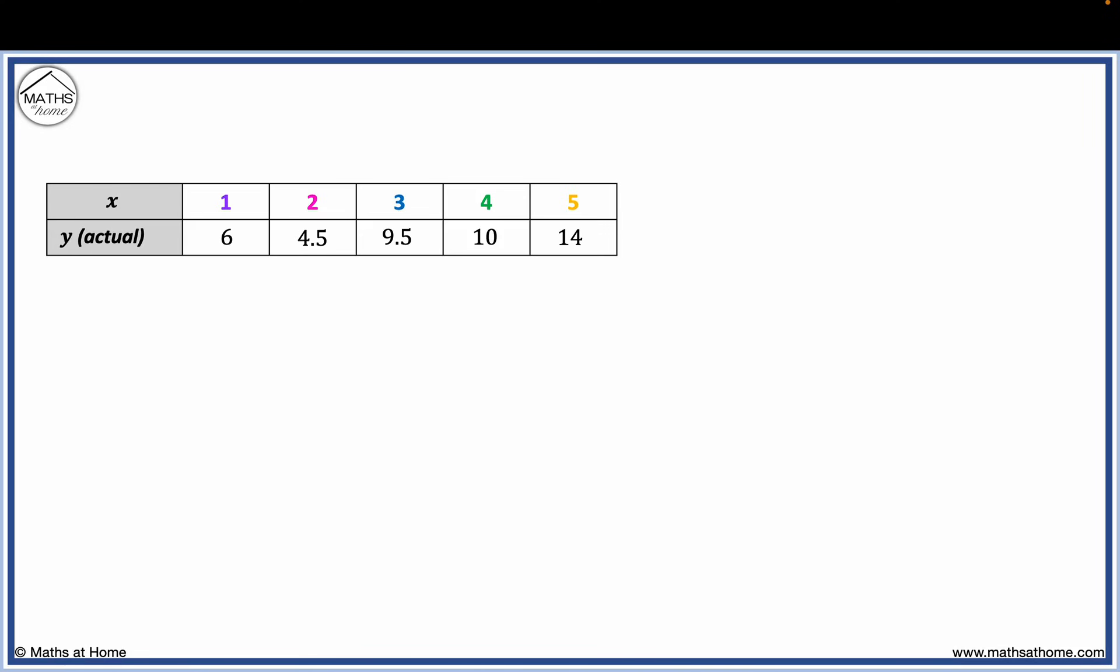Here is a table of data. The least squares regression line is first found. The least squares regression line for this data is y equals 2.15x plus 2.35.